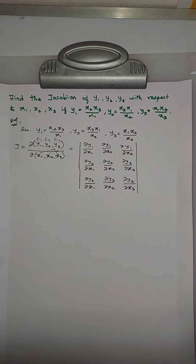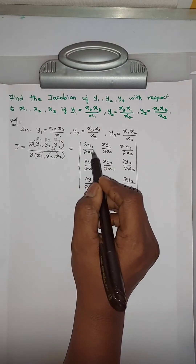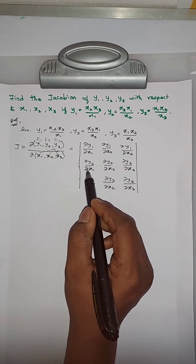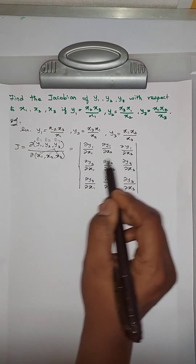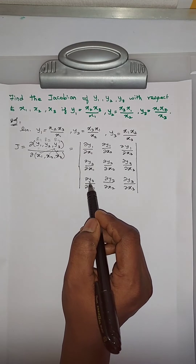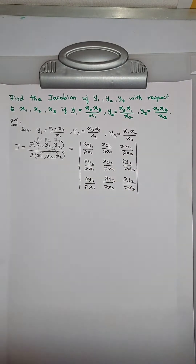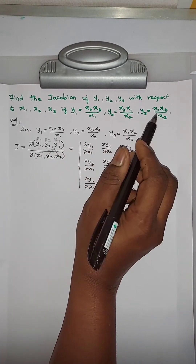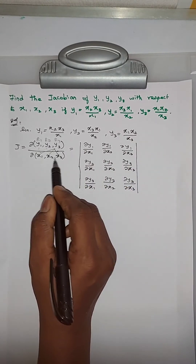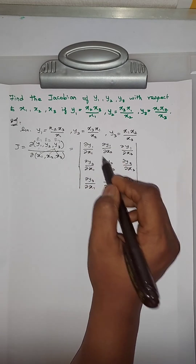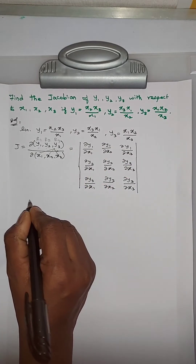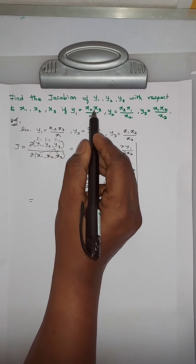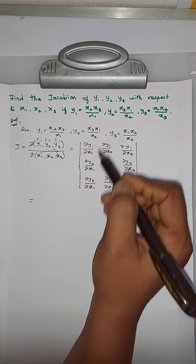Now we should find the values of these derivatives. The values of y1, y2, y3 are given in the question. We have to differentiate them partially with respect to x1, x2, x3. Jacobian deals with partial differentiation. So we differentiate y1 with respect to x1 partially.